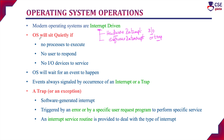Generally, the OS will sit quietly if there is no process to execute, no user to respond, and no I/O devices. That is, if none of the processes execute with the CPU and there is no user intervention and no I/O devices to serve, the operating system will sit quietly. It will wait for an event to happen. That event is nothing but an interrupt. An interrupt in this sense is nothing but a hardware interrupt or a trap, which is a software interrupt.